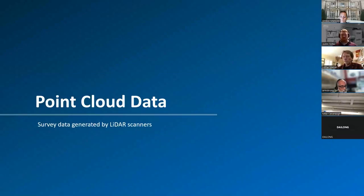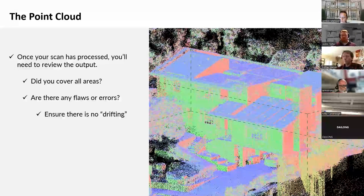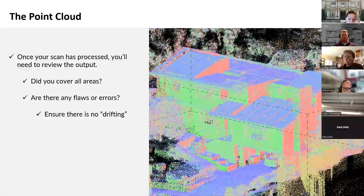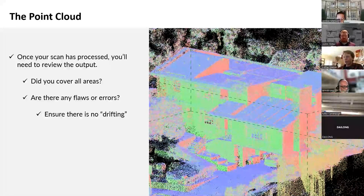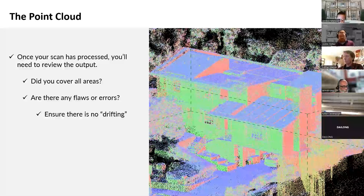Now that we've explored the tools used for advanced data collection, let's look at the point cloud data itself. Reviewing your data well before attempting to create a set of as-builts from a point cloud is a must. Once your scan has processed, review the output: did you cover all the areas? Oftentimes buildings have well-hidden closets, secret rooms, and interior design spaces that hide spaces. Check to make sure you've captured all those — sometimes you find dead spots in the scan that you need to go back and capture.